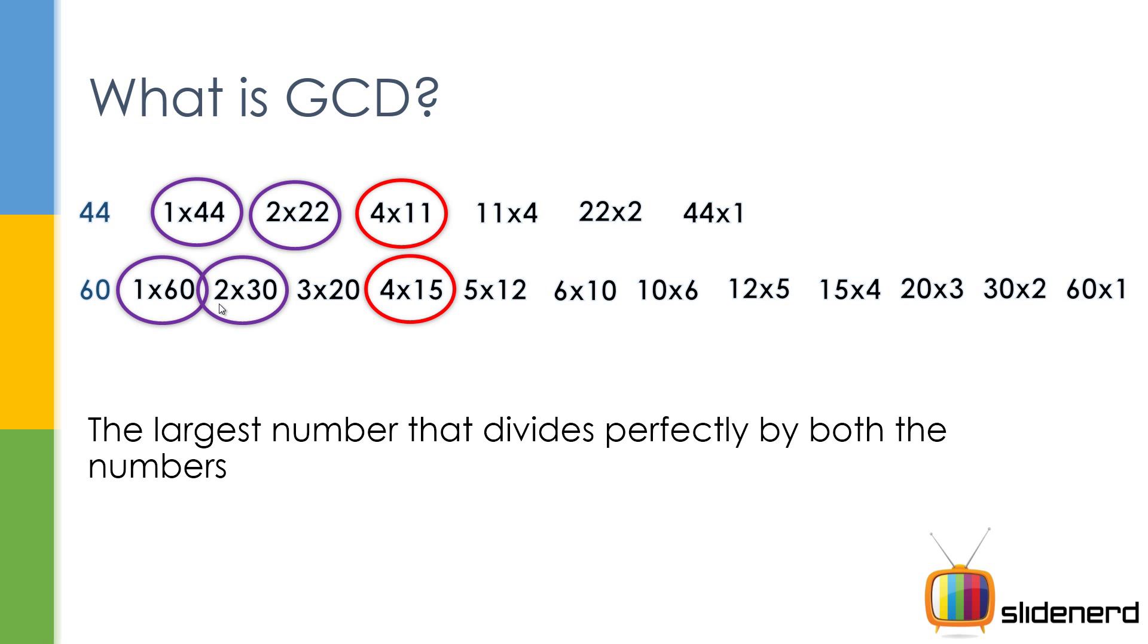This number 4 is the greatest common number that can divide both 44 and 60 and that is the meaning of GCD. It's pretty simple.